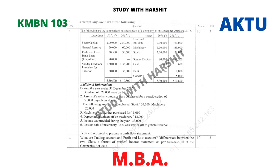Question 5A: The following are the summarized balance sheets of a company as on December 2016 and 2017. You are required to prepare a cash flow statement.